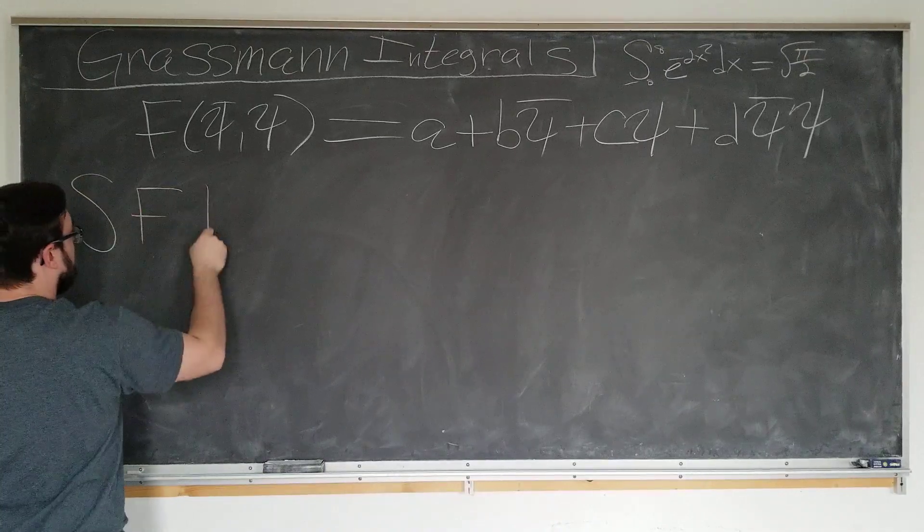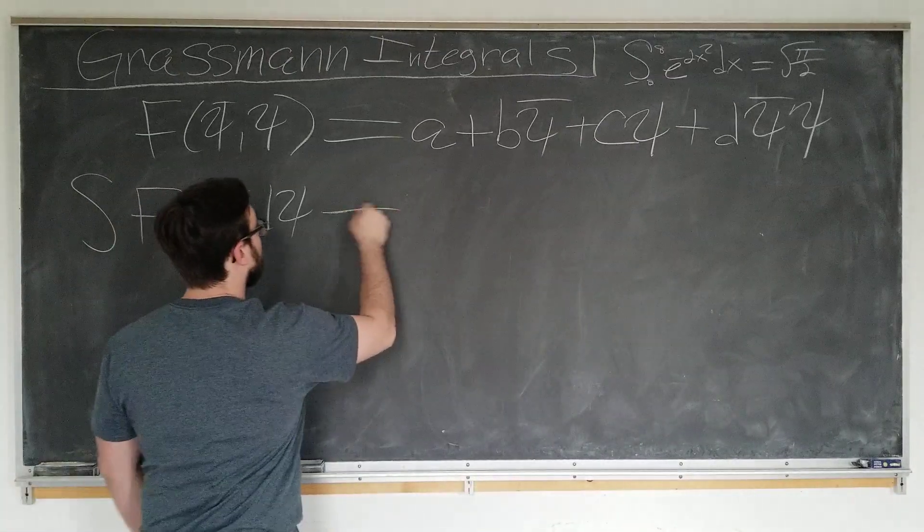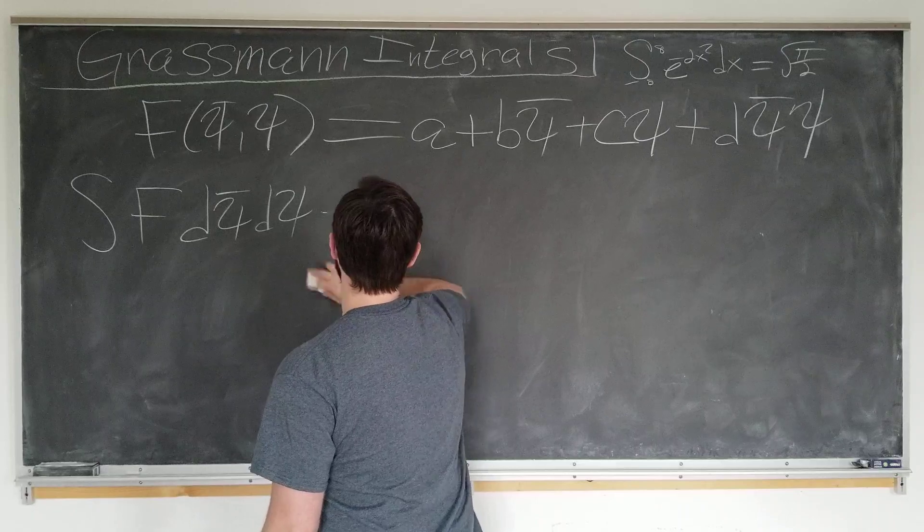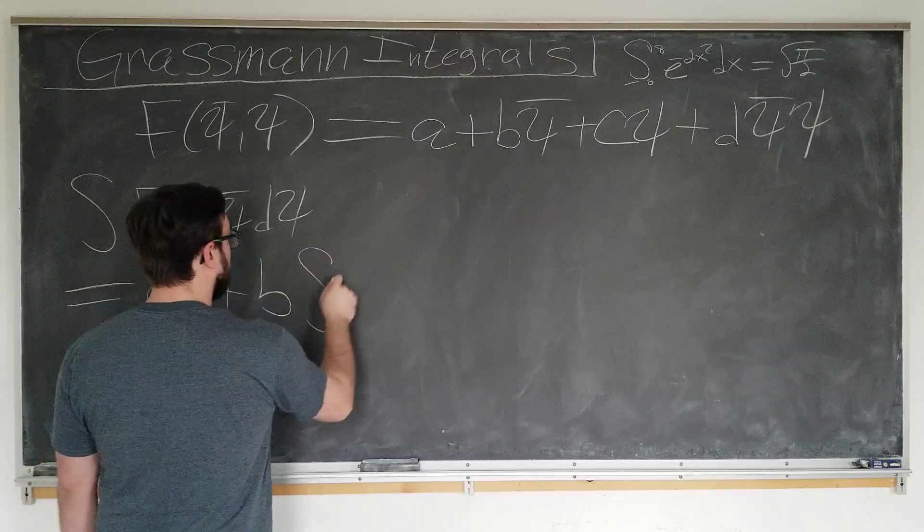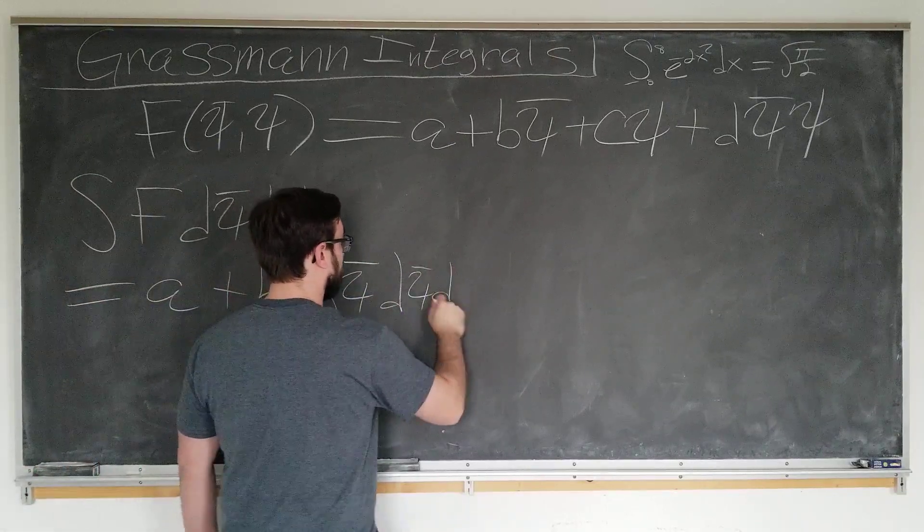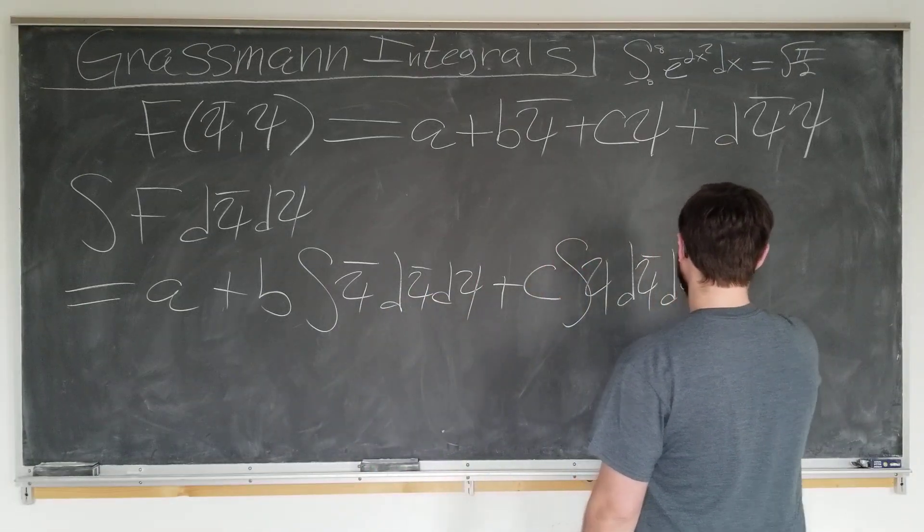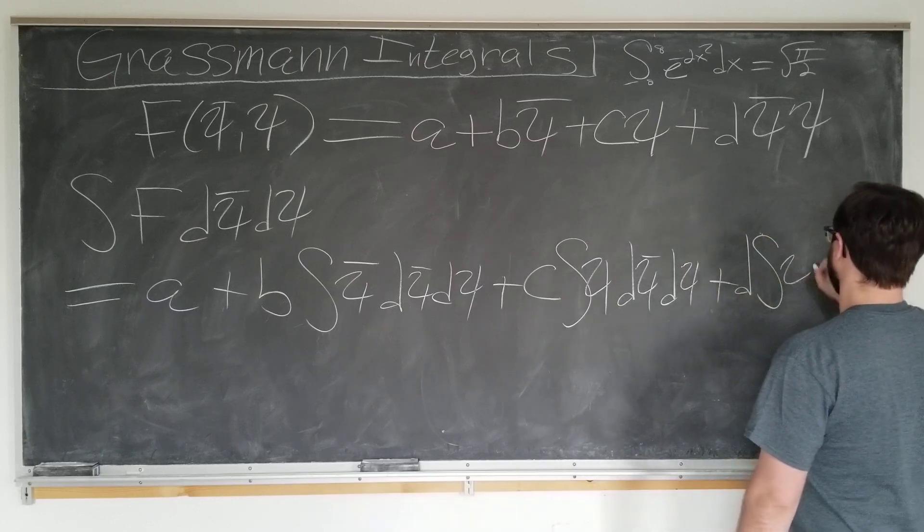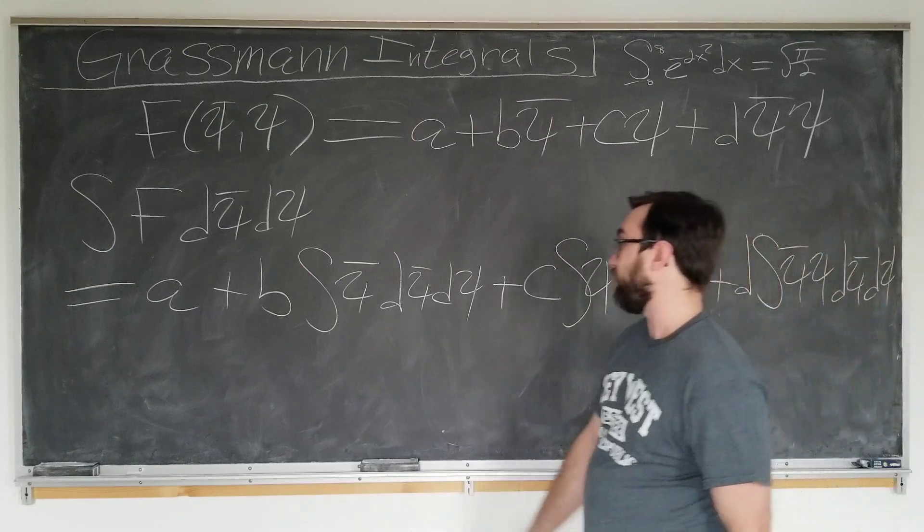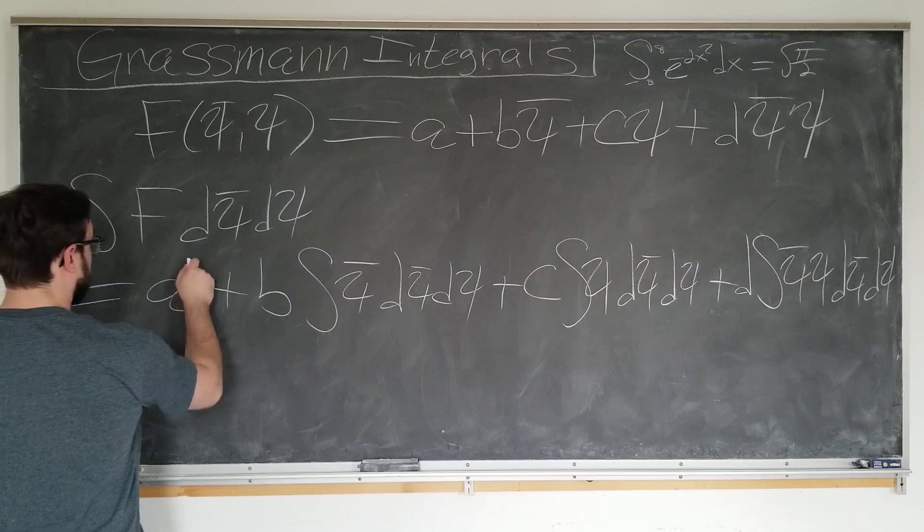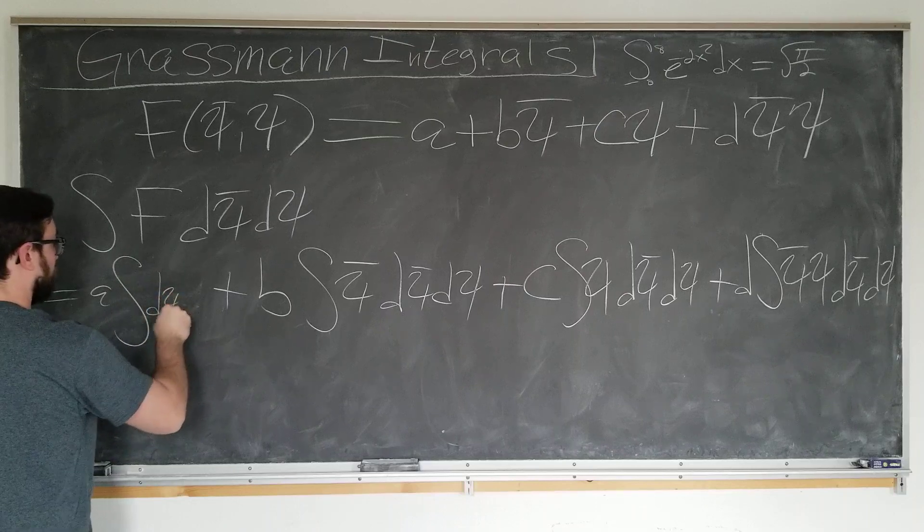Okay, integral of f d psi bar d psi. Notice we have two variables to integrate over now. Well, it's going to be a plus b integral of psi bar d psi bar d psi, plus c integral of psi d psi bar d psi, plus finally the important d term, psi bar psi d psi bar d psi. We know from our experience the only last term is going to matter. And a slight mistake here, sorry about that. a integral of d psi bar d psi.